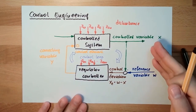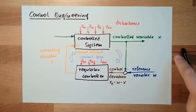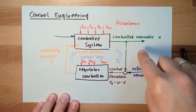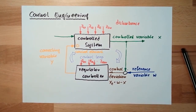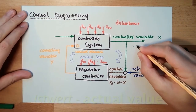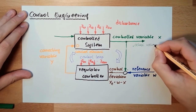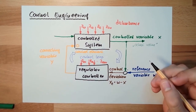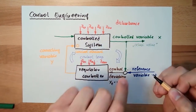The control variable is actually the variable which I am controlling — so the control variable is the continuous part. And if I'm talking about what is right now, at this point in time, then this is also called the actual value. This is the value which the control variable currently has.